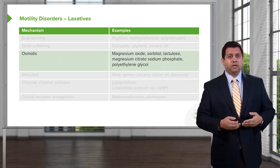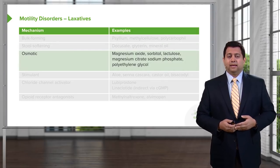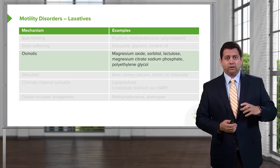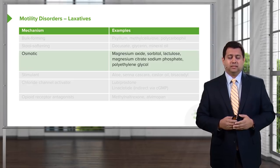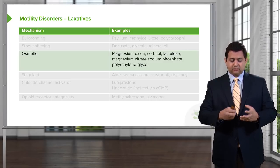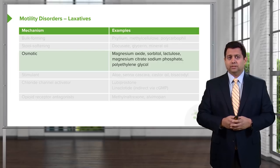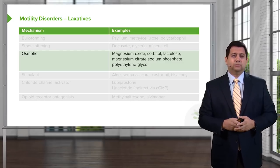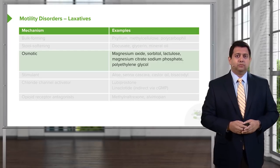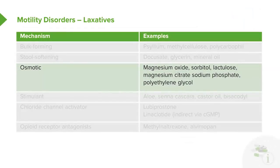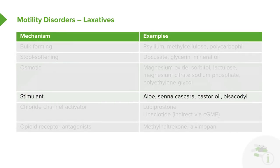Osmotic cathartics work by causing more water to be present in the stool — creating a gel matrix within the stool so that water stays in and the stool is softer. Magnesium oxide and similar agents are examples of this. Stimulants act by actually irritating the bowel. The prototypical and very old example is castor oil.